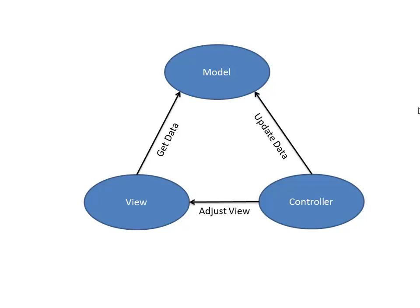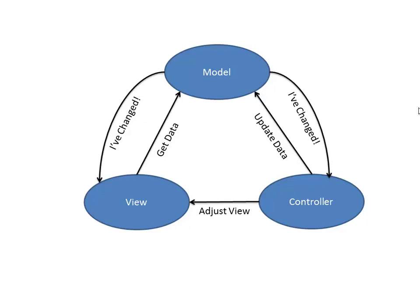Anytime data is updated, the view is probably going to want to refresh. We take advantage of the observer pattern — the model will tell the view and the controller that he's changed. The view most definitely cares because anytime the data changes it's going to want to go back to the model and get that data again. The view registers with the model and says 'tell me when you've changed.' When it gets that notification, it goes back and gets the data.